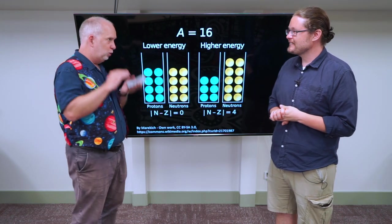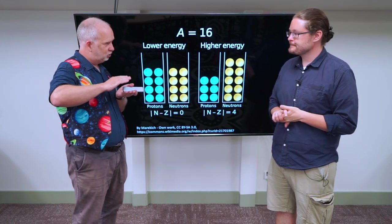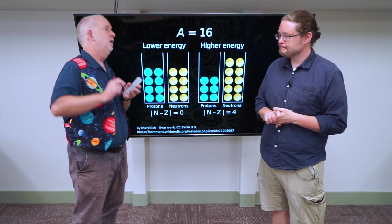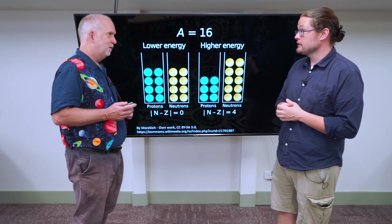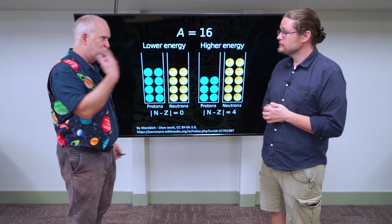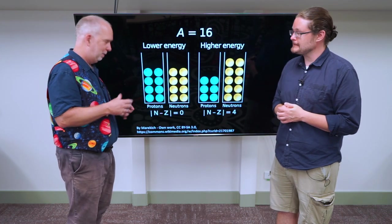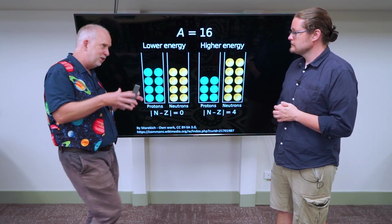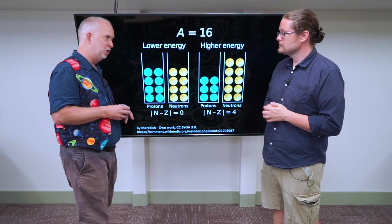If you remember, for electrons there's a thing called the Pauli exclusion principle that says that you only have a certain number of electrons at each energy level. We were looking at that with spectra. Same thing applies to neutrons and protons in the nucleus. They're quantum mechanical things and you only get a certain number in each energy level.